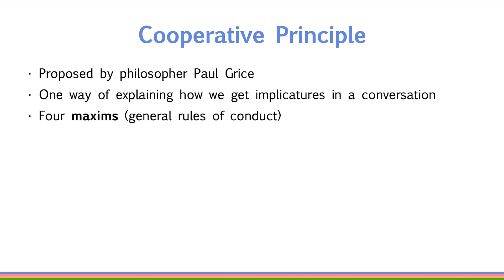Specifically, Grice described four maxims, or general rules of conduct, that might be the basis of many conversations: the maxim of quality, the maxim of quantity, the maxim of relation, and the maxim of manner. The idea is that if these are the conversational rules that people follow, and if people assume that other people follow these rules too, then there is an explanation of why certain implicatures arise in discourse.